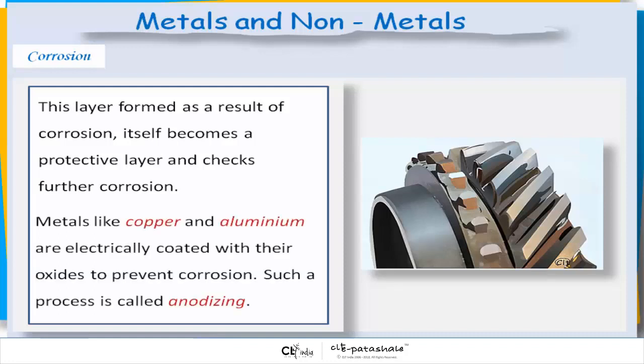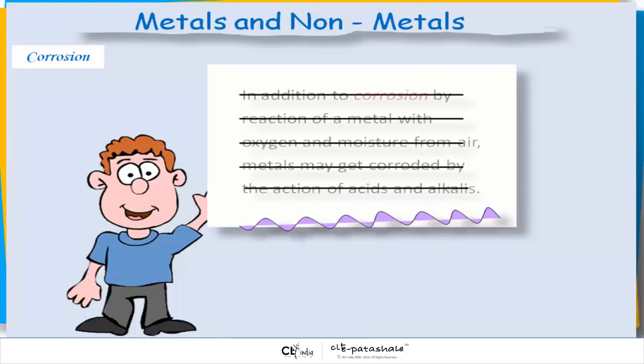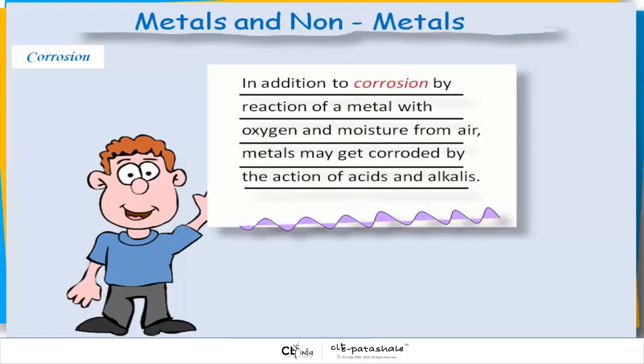Metals like copper and aluminium are electrically coated with their oxides to prevent corrosion. Such a process is called anodizing. In addition to corrosion by reaction of a metal with oxygen and moisture from air, metals may also get corroded by the action of acids and alkalies.